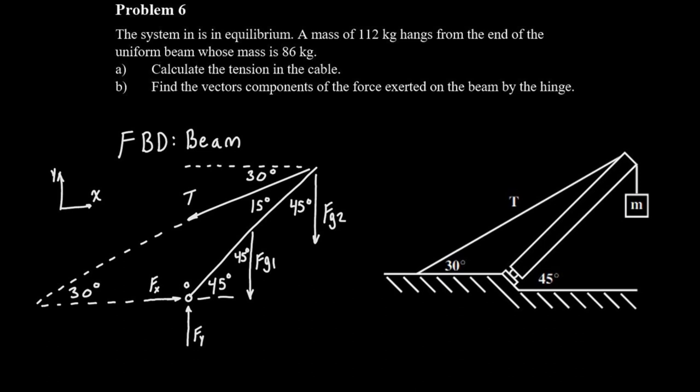We've got FG1 which is going to be the weight of the beam and then FG2 which is going to be the weight hanging off the end of the beam. Then we've got the tension which we know is going to act in the same direction as the cable. And the last ones we need to add are going to be the reaction forces at the pin.